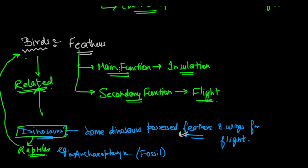First, they developed feathers for insulation, then for flight. And then it was seen that since both birds and dinosaurs have feathers, birds evolved from reptiles — because reptiles initially did not have feathers. They developed feathers and then dinosaurs developed wings and other forms of body design, finally developing into a new group of organisms which we call birds. This is another example of evolution by stages.